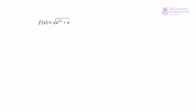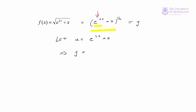Here we have a function that's a little bit more complicated. We can write it as e^(2x + x^(1/2)). So here we have a function of a function, and then again another function of a function — a compound function. We'll let that equal y, and let u = e^(2x + x). So y = u^(1/2).